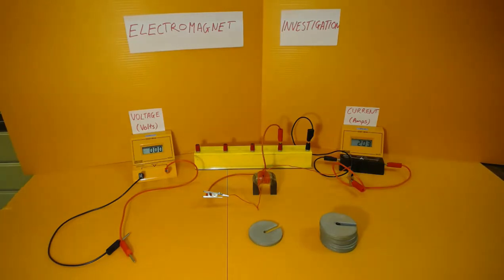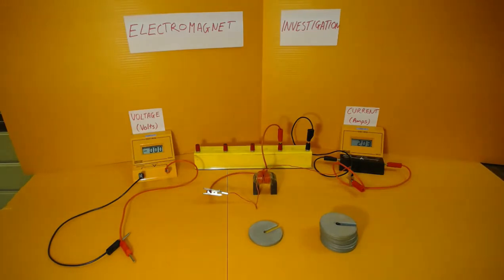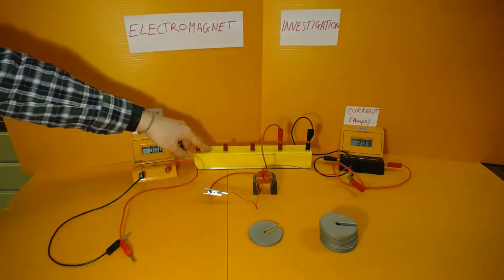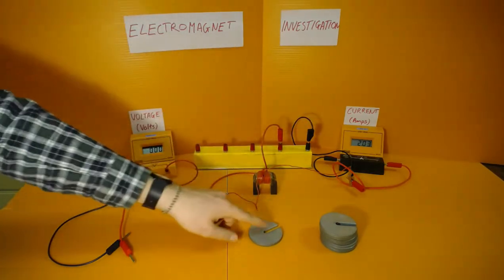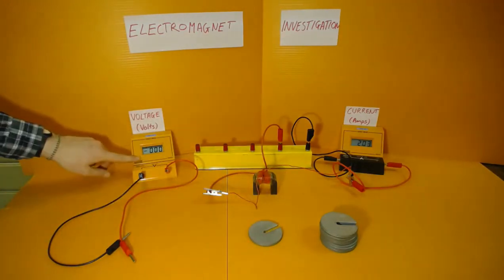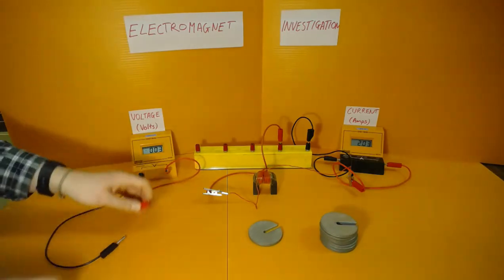In our setup we have an electromagnet which is an iron C core wrapped in 20 coils of wire. We have a battery board as the power supply. We have an ammeter to measure the current and we have slotted masses for the electromagnet to pick up. We also have a voltmeter which we will plug in across the electromagnet to take measurement of the voltage.